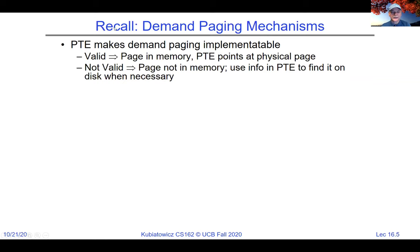What we started talking about last time was demand paging mechanisms. The page table entries make it possible to build demand paging. In Intel chips and in general, PTEs have a valid bit. When the valid bit is set to one, the page is in memory and the hardware can go ahead and do the reference. When it's zero, the page is not in memory and you get a page fault. In Intel chips, this is called 'present' as opposed to 'valid,' but it's the same idea.